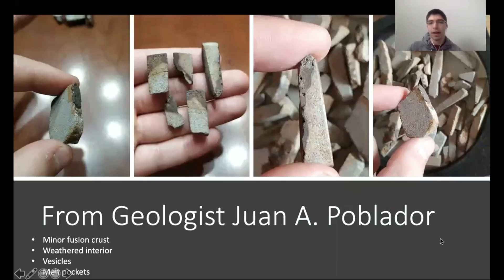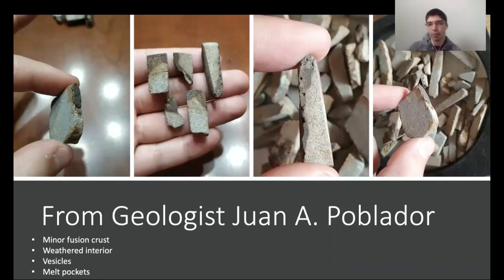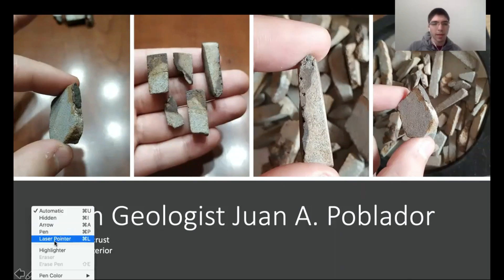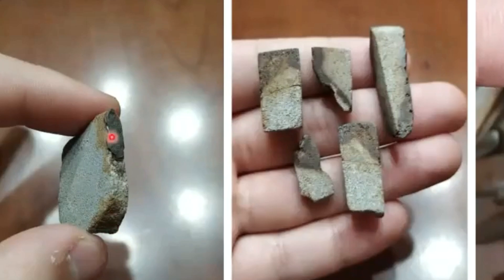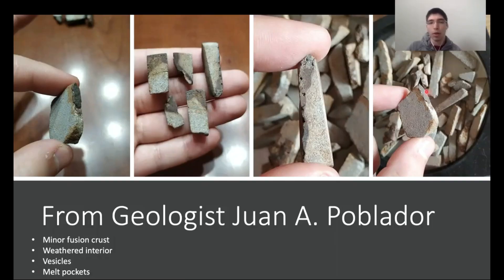This sample is actually very interesting. It was sent to me by geologist Juan A. Poblador, and when he sent it to me, he wasn't sure what it was. He thought it could be a potential meteor wrong, or if it was something, perhaps an LL or L6. When I obtained the sample, I noticed some minor fusion crust present on some of the pieces, but not all of them — it appears a lot of it was weathered away.